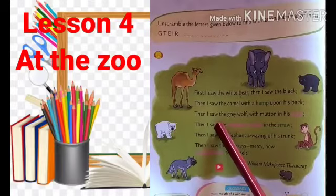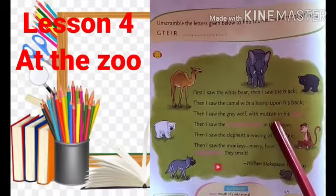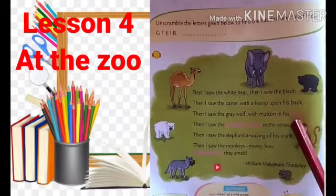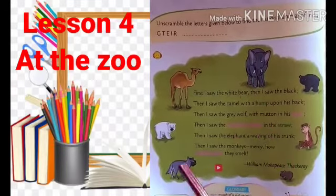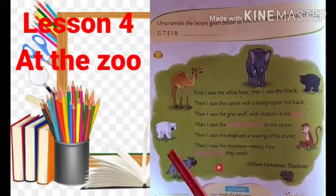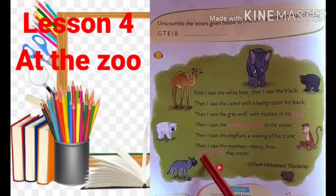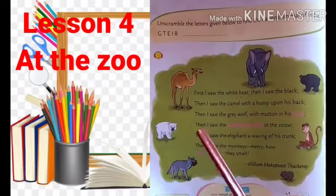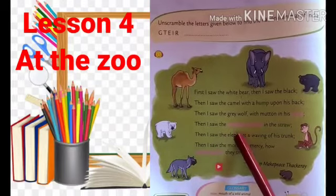Then I saw the gray wolf with a mutton in his mouth. What is this? What is the color of the wolf? Gray. And what is there in his mouth? Mutton.